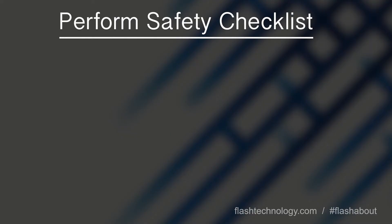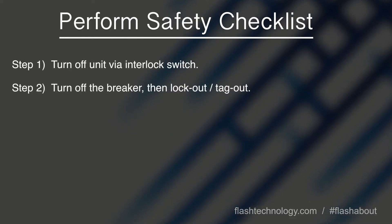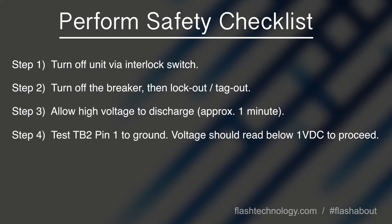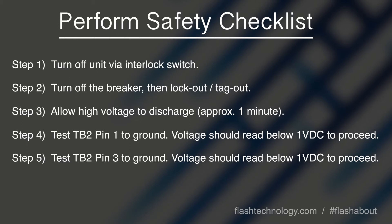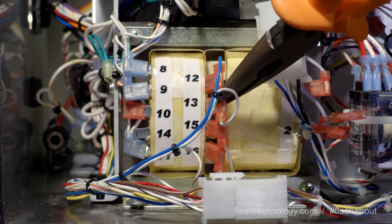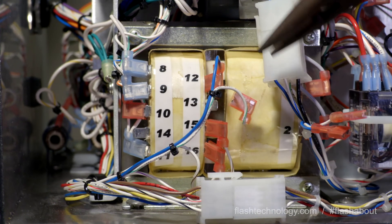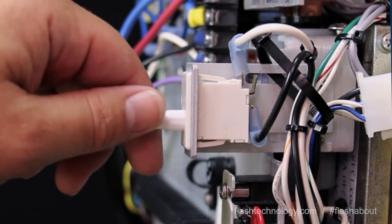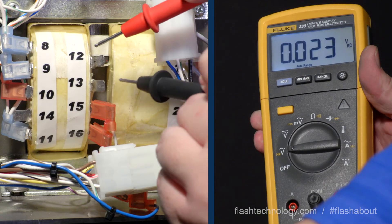Now remove the white-green wire from pin 13 and the blue wire from pin 12. Once the wires are removed, power the unit back on and test across pin 12 and 13 with your meter in AC voltage.